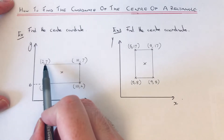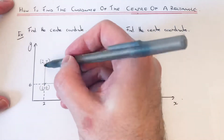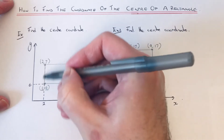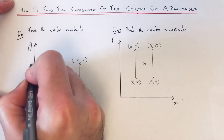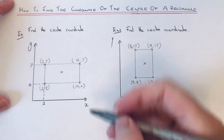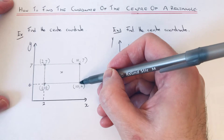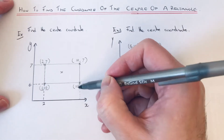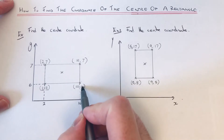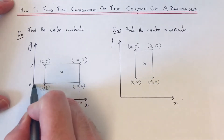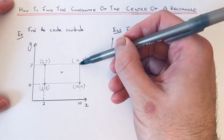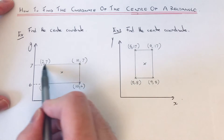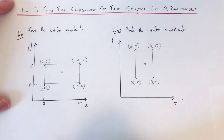Let's do the same for the other corners. This corner at the top is (2, 7) — so the line going down is two, which we've already got, and the line going across gives us seven. For the next corner, the line going down gives us ten, and the six we've already got. Our final corner checks out at ten on the x-axis and seven on the y-axis.